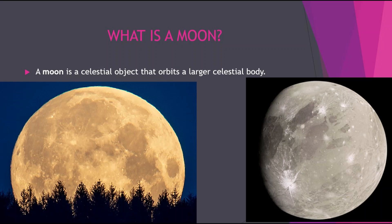For example, Pluto has a moon called Charon, and it even has four more moons. You may remember from the third episode of the series about the dwarf planet Eris — that planet has one moon called Dysnomia. So even dwarf planets, as well as planets, can have moons.